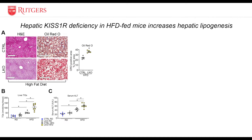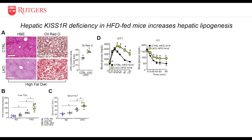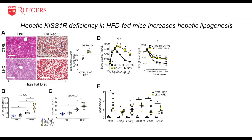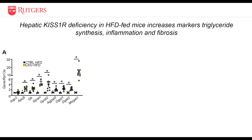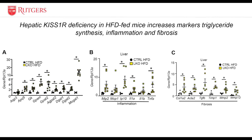High-fat diet knockout mice also had increased liver triglycerides and serum alanine aminotransferase, or ALT levels, which is commonly used clinically as a marker for liver disease. Results also showed that compared to high-fat diet-fed controls, high-fat diet-fed knockout mice were glucose intolerant and insulin resistant. Many of the key regulators of lipogenesis were significantly upregulated in hepatic knockout mice on high-fat diet, observed at the protein level as well. Key regulators of triglyceride synthesis, inflammation, and fibrosis were also significantly upregulated.